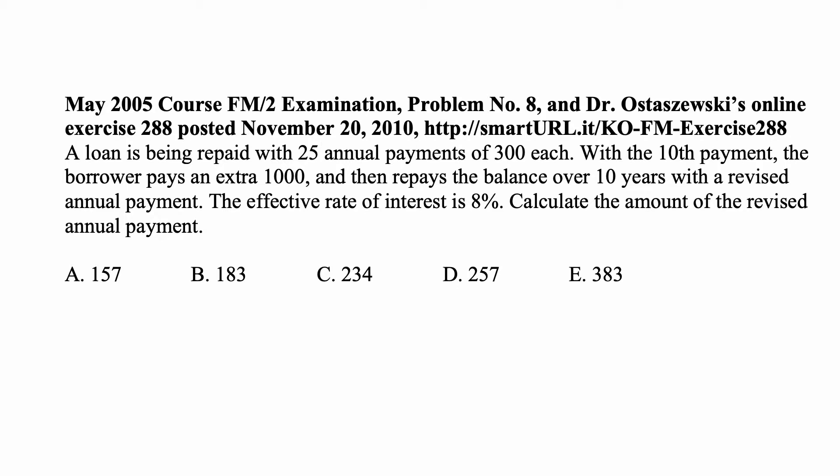A loan is being repaid with 25 annual payments of 300 each. With the 10th payment, the borrower pays an extra 1000 and then repays the balance over 10 years for the revised annual payment. The effective rate of interest is 8%. Calculate the amount of the revised annual payment.